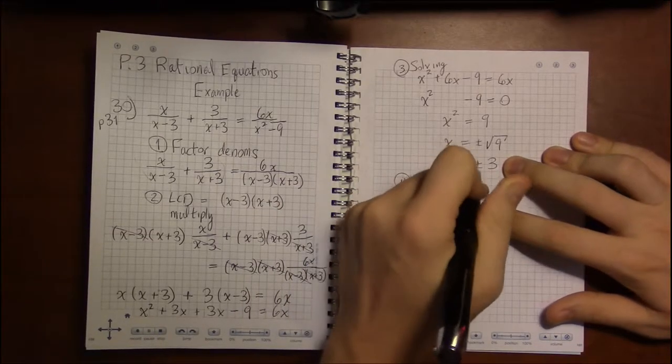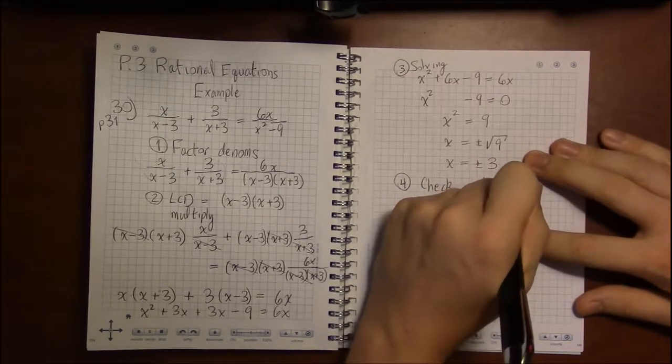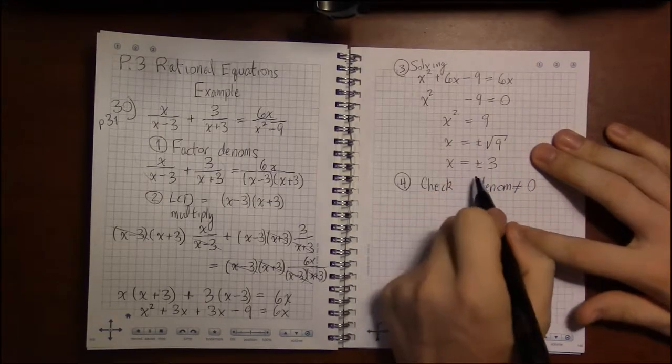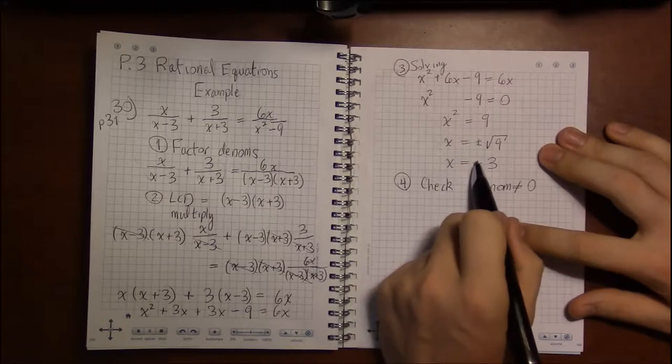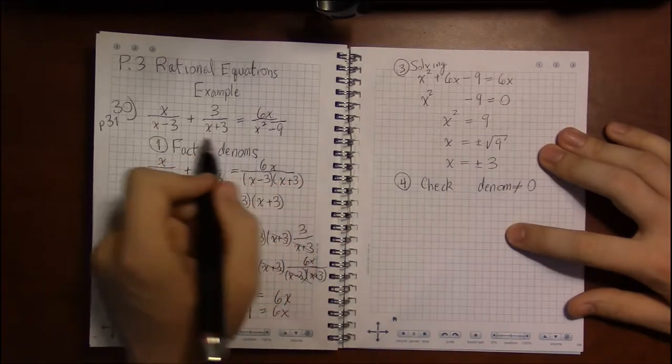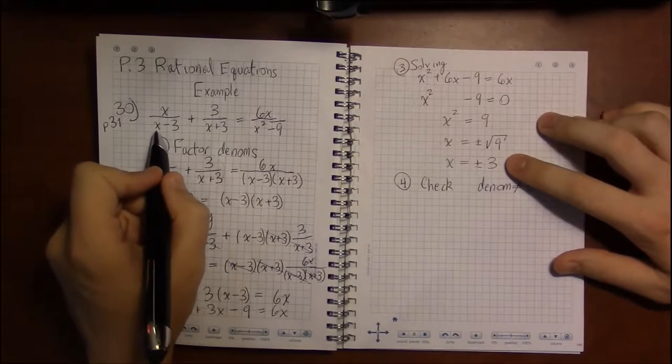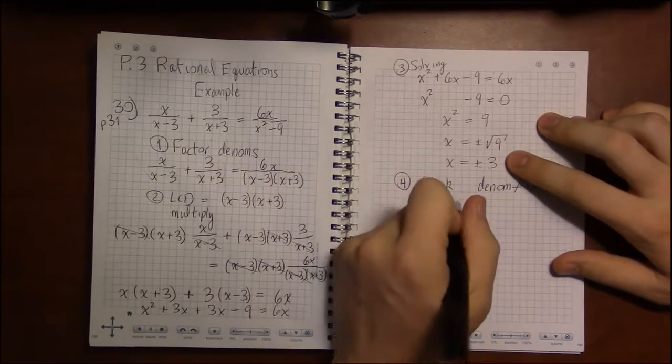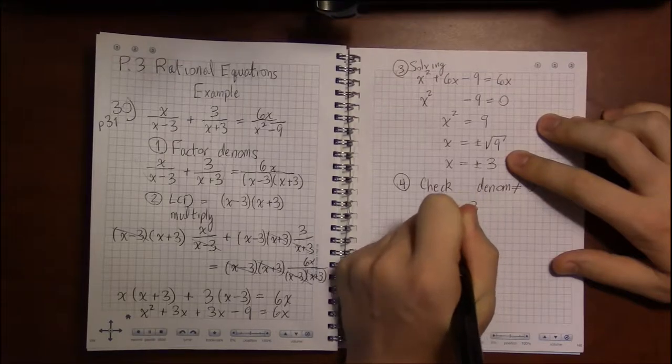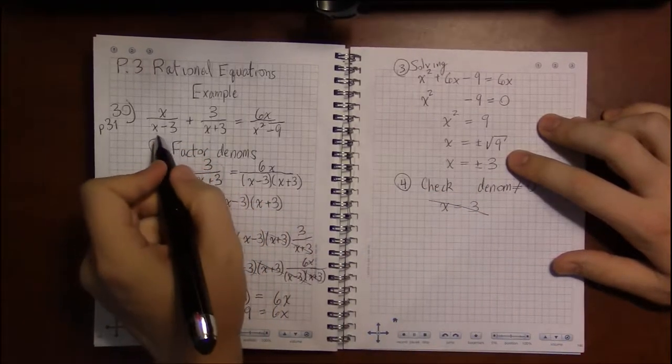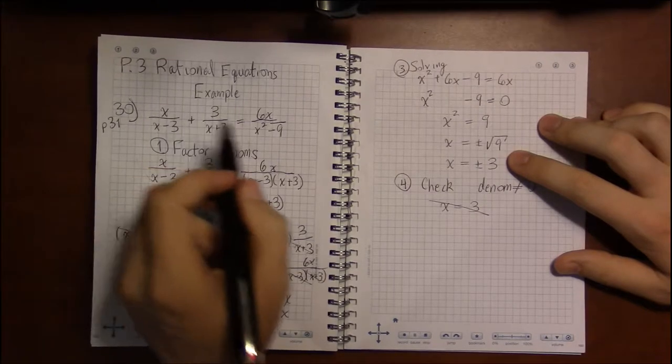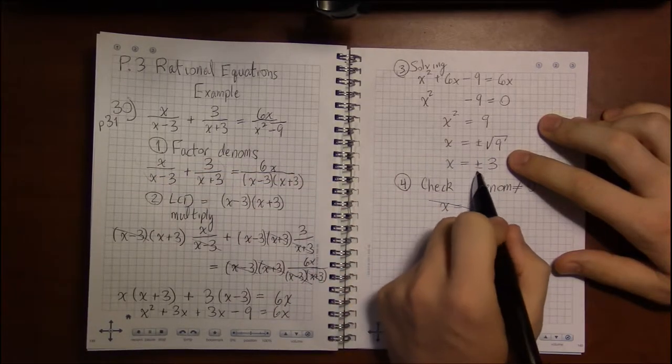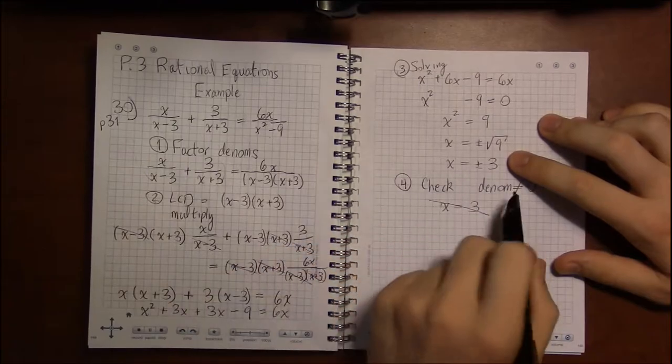Namely, we have to check that the denominators are not 0 at any one of our solutions. So if x equals plus 3, does any denominator become 0? If x is plus 3, we get 3 minus 3, which is 0. The first one is 0. So x can't be plus 3. We have to throw x equals 3 out because it made one denominator 0. It'll actually make the first and the third, the last denominator, 0. But all it needs is to make one 0 and it's thrown out.